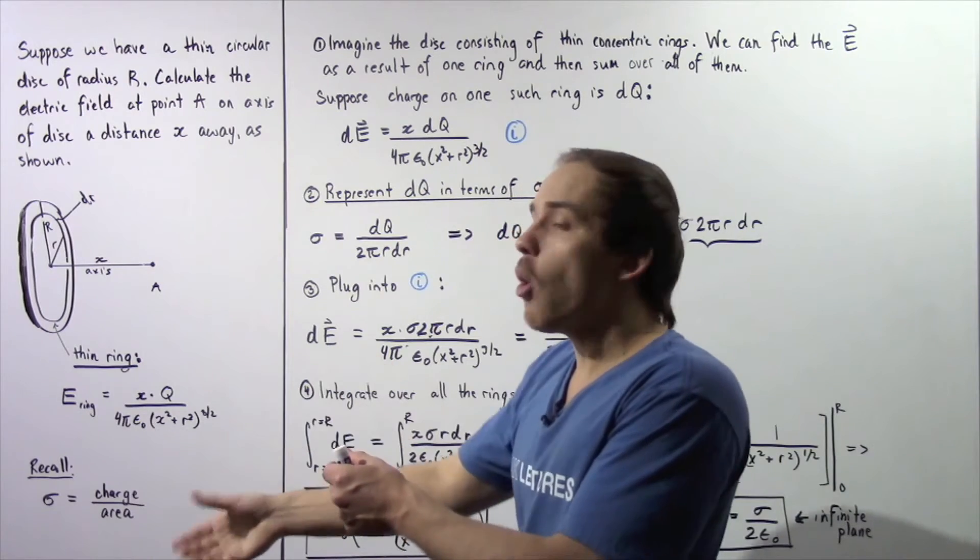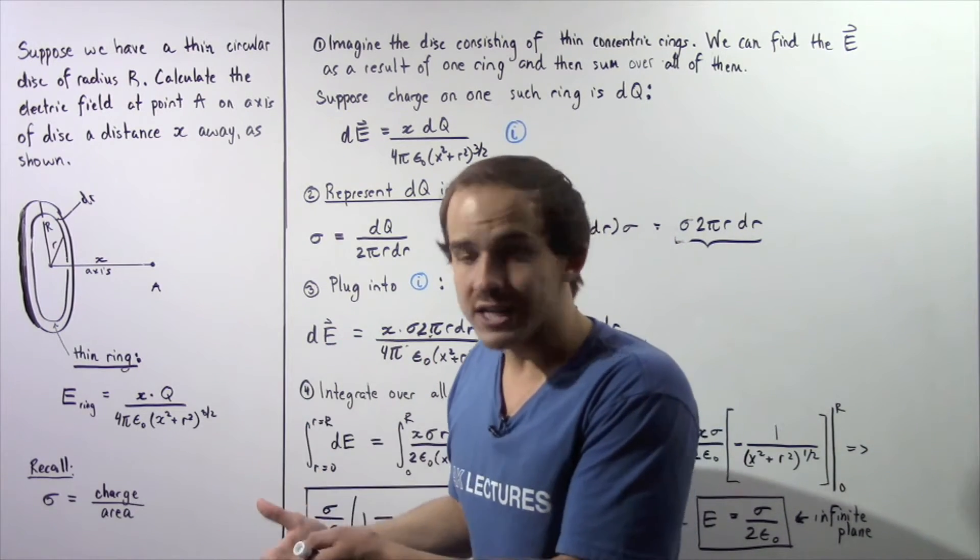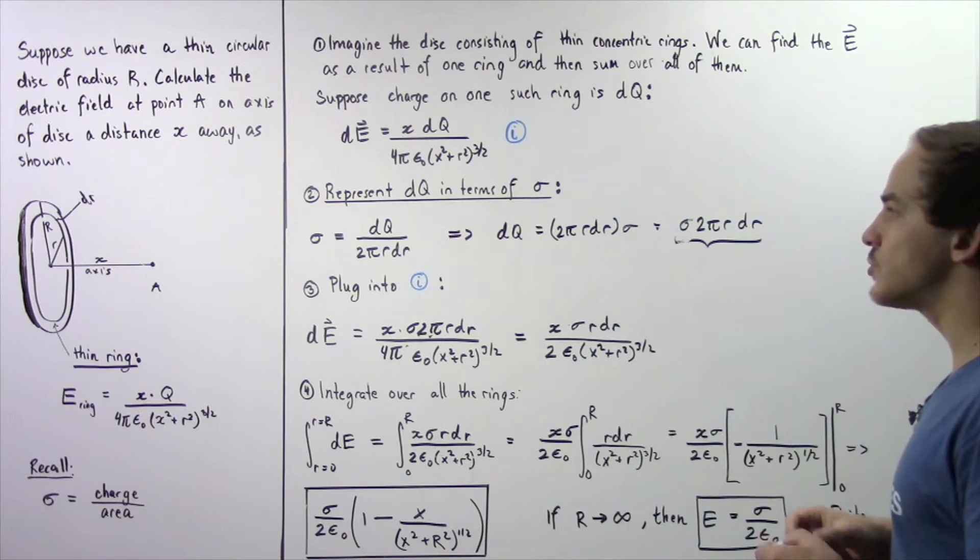So we can first find what the electric field is as a result of this ring, and then we sum over all of these rings. So we integrate. And that's exactly what we do in this lecture.